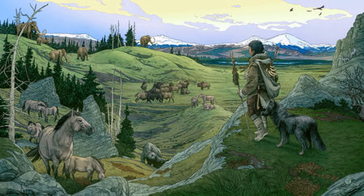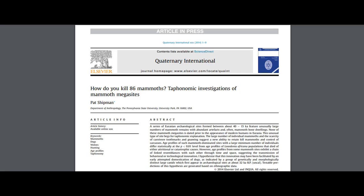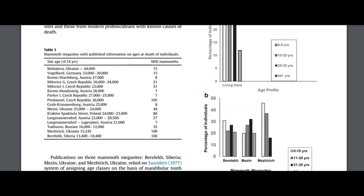Why did humans start domesticating wolves at all? One notable hypothesis is that wolves scavenged at the edges of temporary human settlements. As wolves were in increasing contact with humans, the less aggressive ones were inadvertently selected by being offered food and shelter. This could have resulted in a mutualistic relationship between humans and proto-dogs, as dogs can provide protection and a hunting partner in return, suggesting perhaps that humans did not domesticate wolves, but rather these two species entered into a mutually beneficial partnership. Mass mammoth graveyards called mammoth megasites, dating to between 40,000 and 15,000 years ago, have been identified in Eurasia, which have been attributed to the invention of projectile technology and canid domestication.